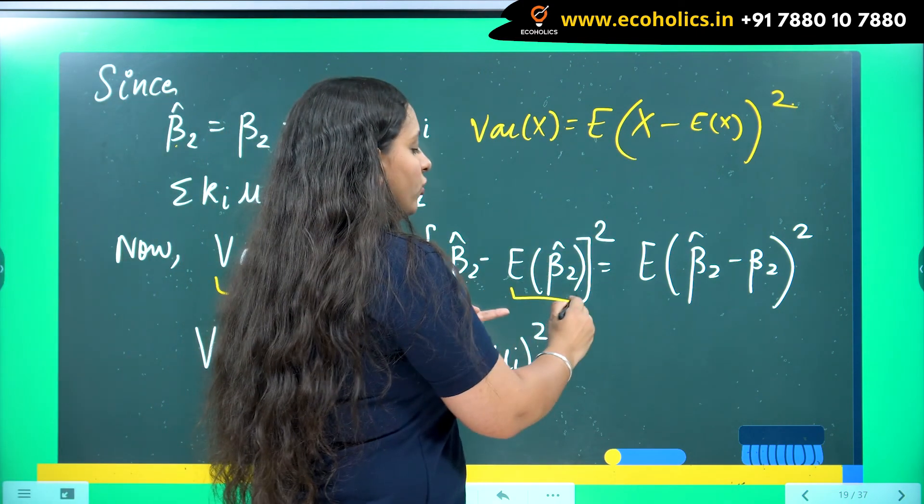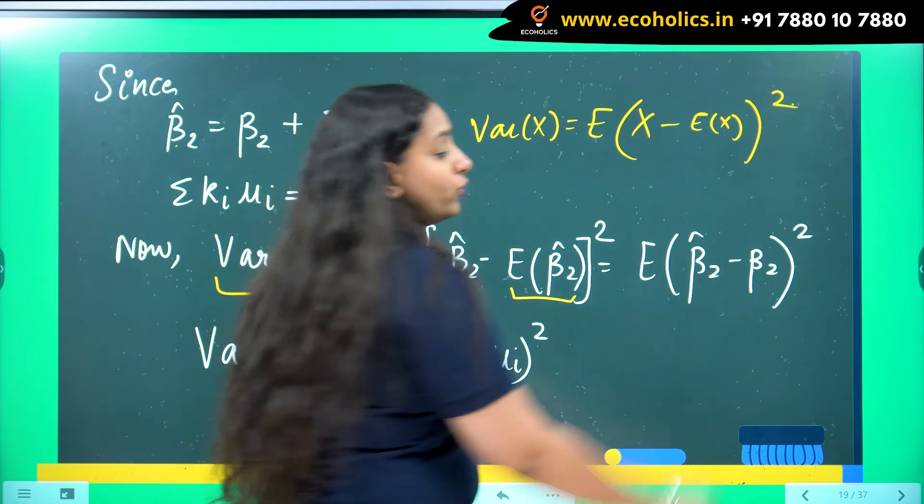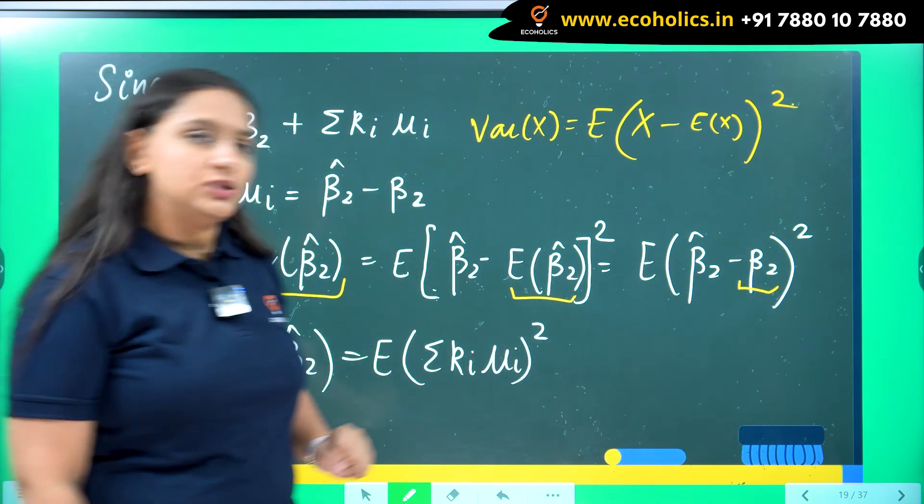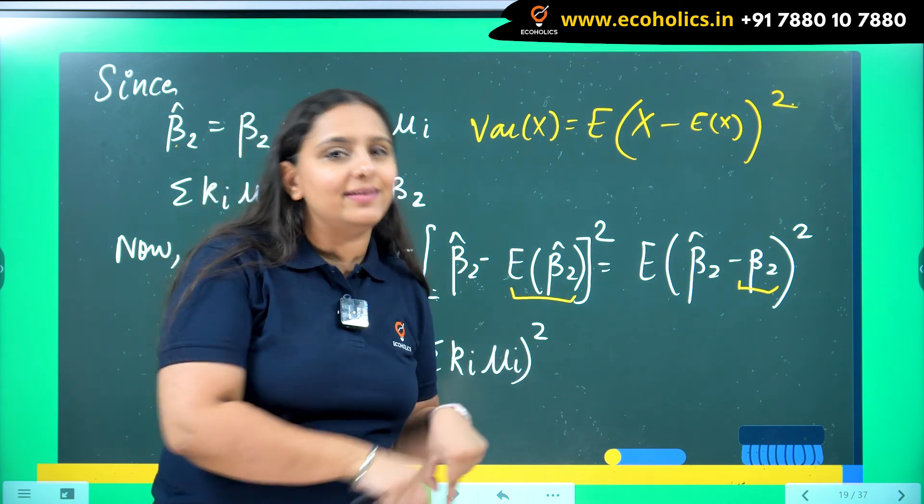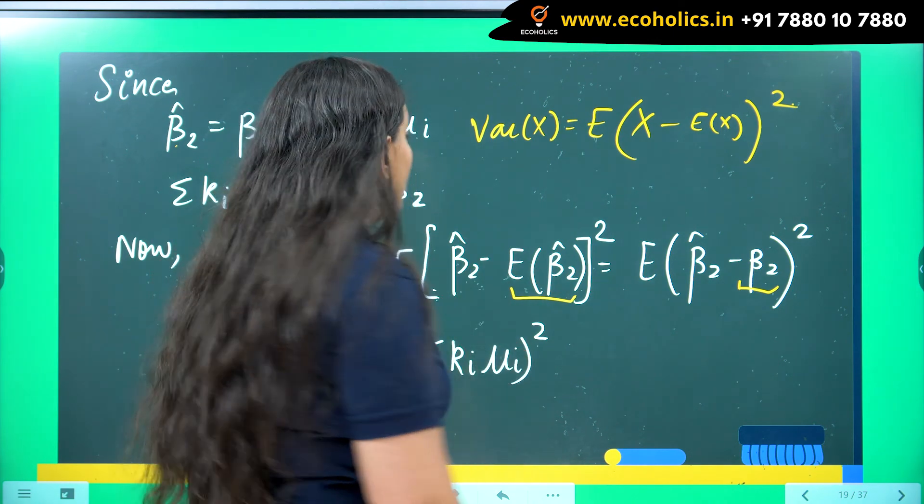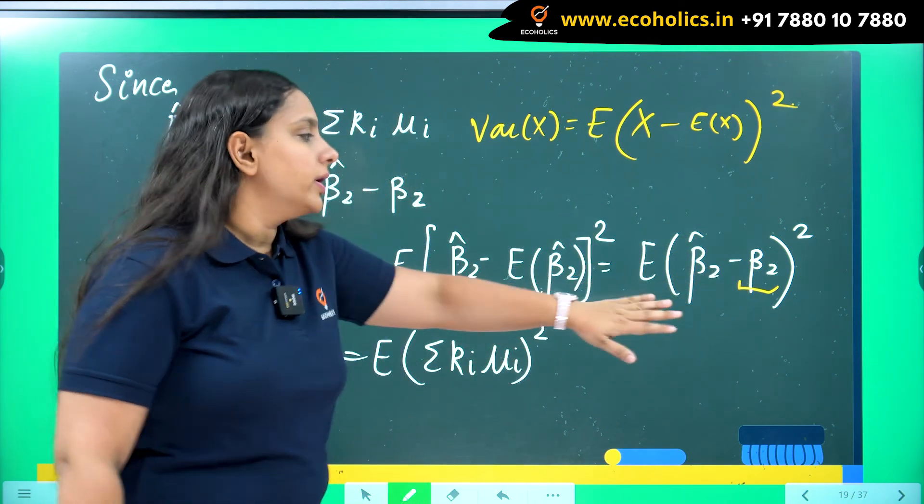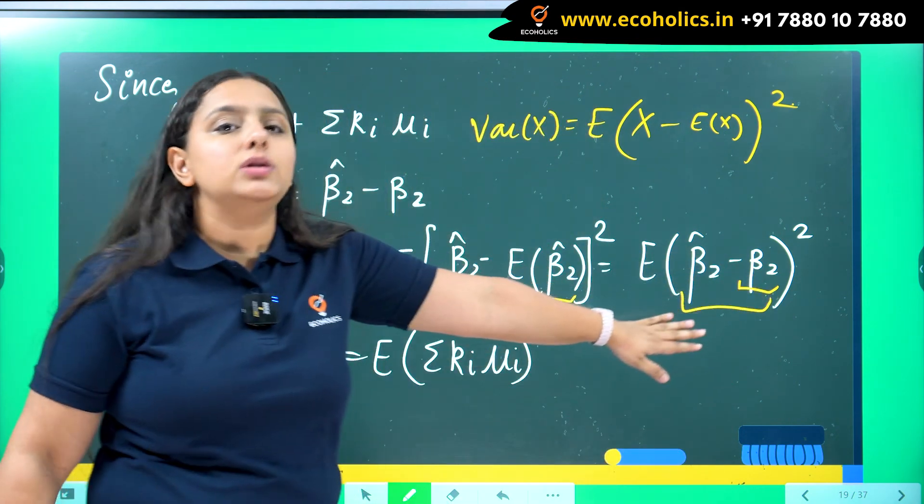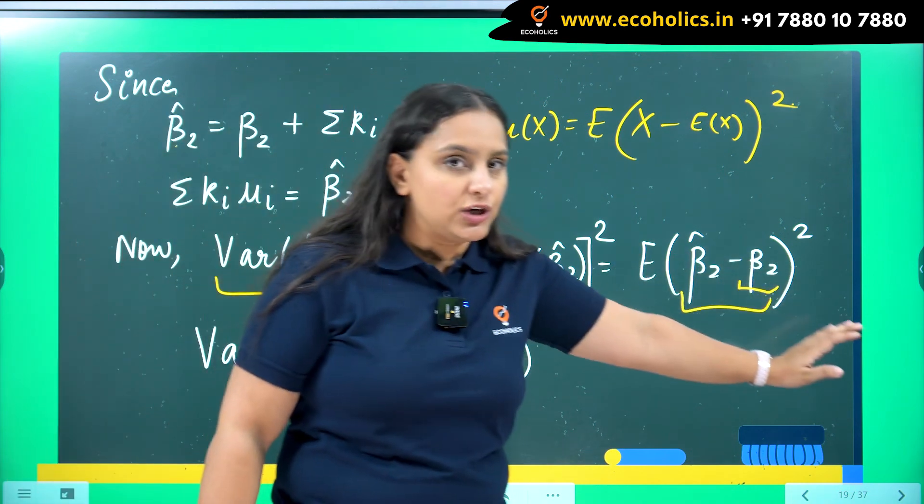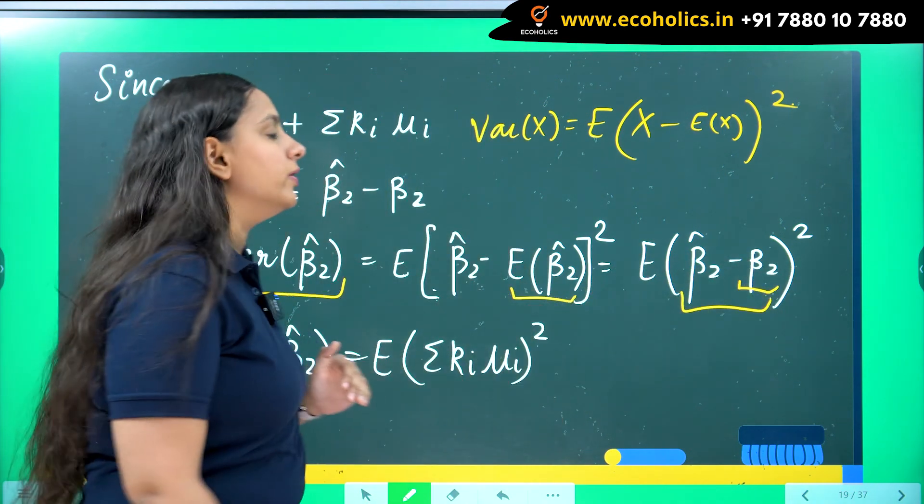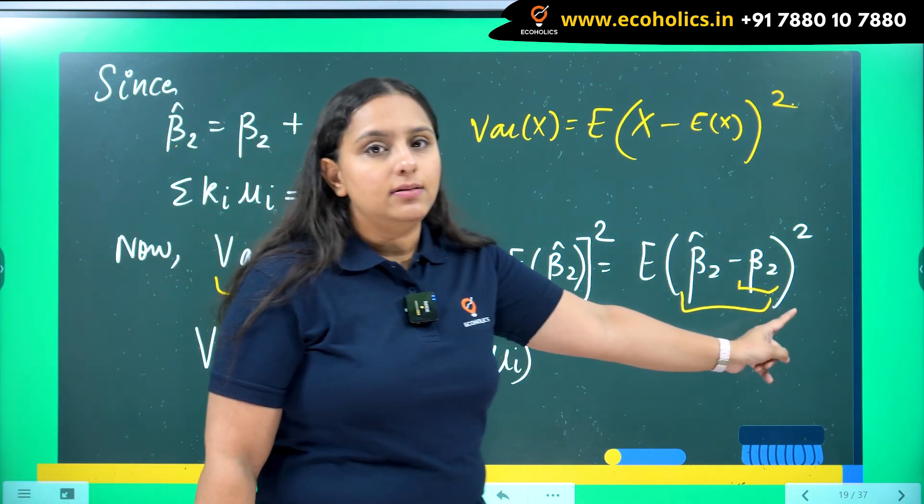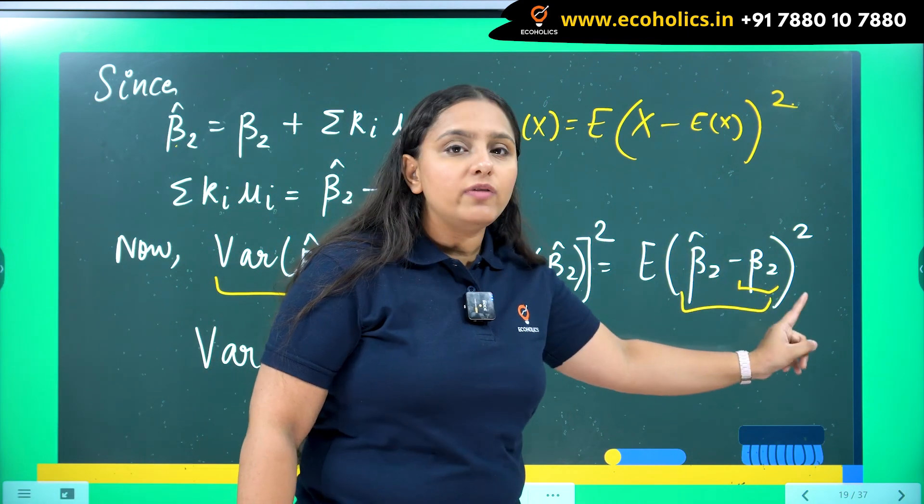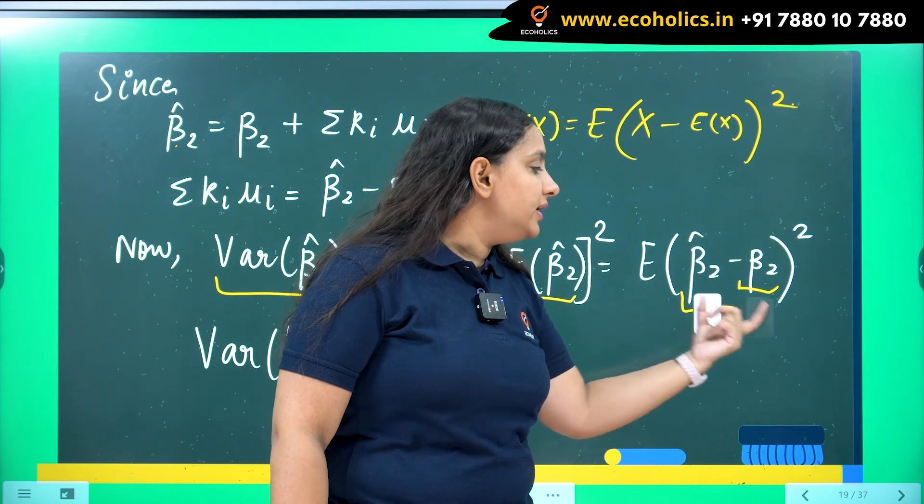Now I know expected value of beta 2 hat is nothing, it is equal to beta 2, which we have proved in the unbiasedness video for which you will find the link in the description box below. So this is what I have got. Now I just needed the value for this thing because as soon as I will get the value for this, I can solve for expectation and I will get my answer over here.